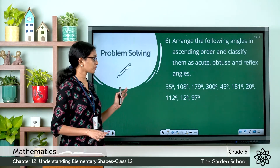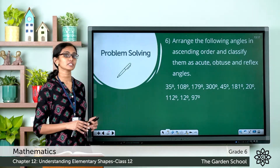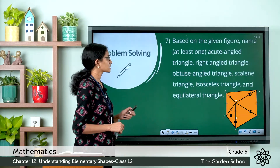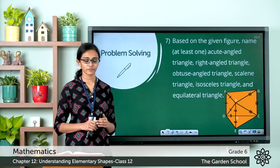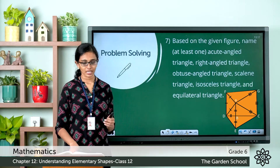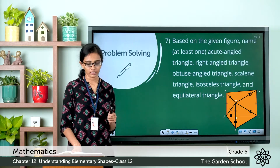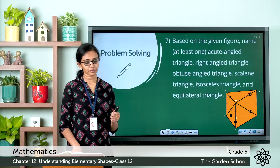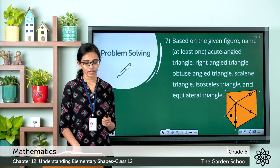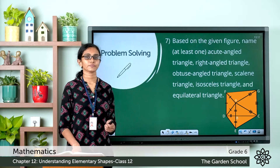Observe the measurements of the angles given and classify them accordingly. The next question says: based on the given figure, name at least one acute angle triangle, right angle triangle, obtuse angle triangle, scalene triangle, isosceles triangle and equilateral triangle.